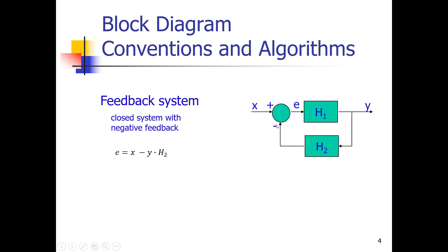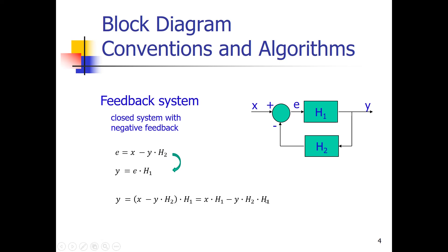So E is this signal minus that signal. The second mathematical equation says that Y is equal to H1 times E. Now I can substitute this expression for E: Y equals X minus Y times H2, all times H1, which equals X times H1 minus Y times H2 times H1. Now we can put this expression to the left side of the equation, and then we get Y plus Y times H2 times H1 equals X times H1.